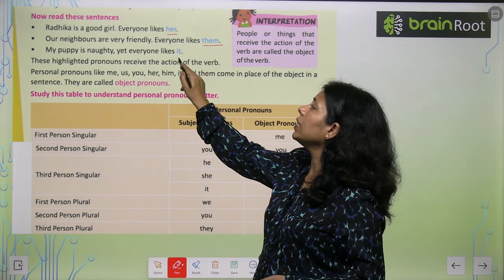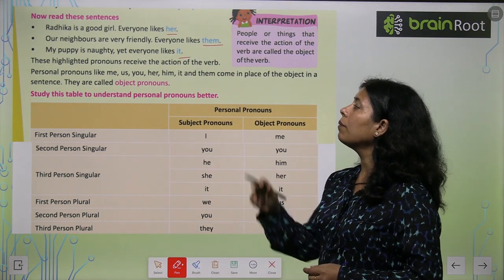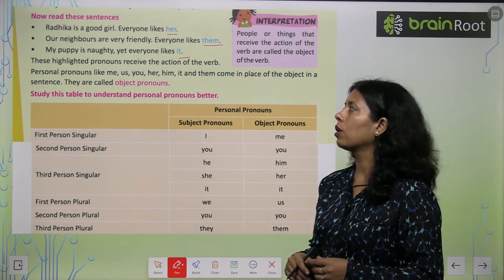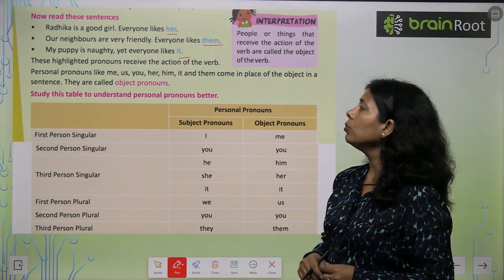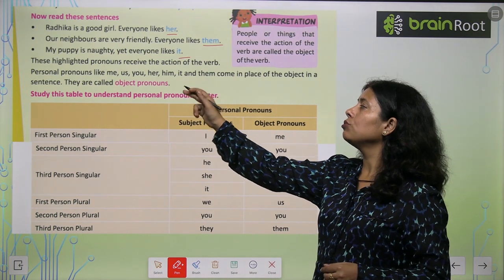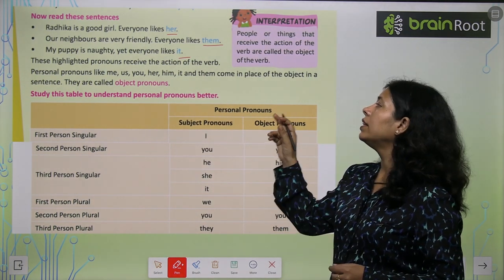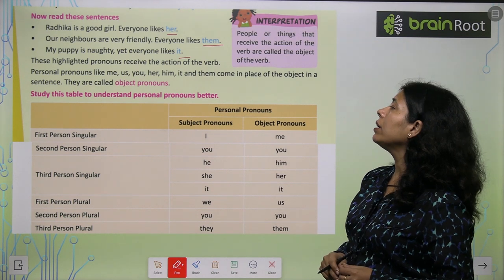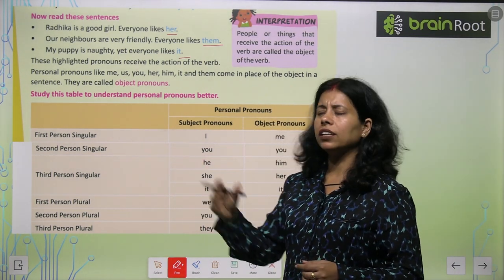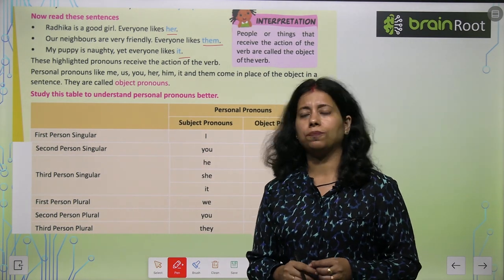Here her and them are object pronouns, because personal pronouns like me, us, you, her, him, it and them come in place of the object in a sentence. So they are called object pronouns.